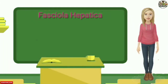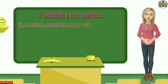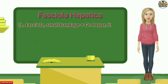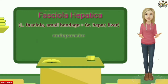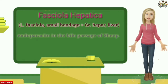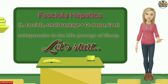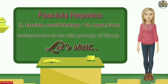Fasciola hepatica comes from the Latin word 'fasciola', meaning small bandage, and the Greek word 'hepa', meaning liver. It lives as an endoparasite in the bile passages of sheep, which is why it is called the sheep liver fluke. Without any further delay, let's start and discuss briefly about this parasite.